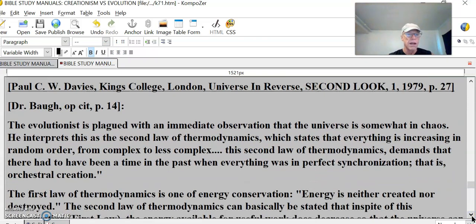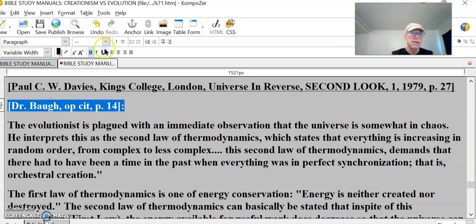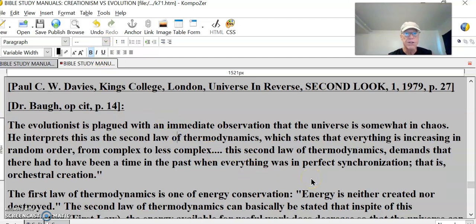Dr. Baugh says in his work, the evolutionist is playing with an immediate observation that the universe is somewhat in chaos. He interprets this as the second law of thermodynamics which states that everything is increasing in random order from complex to less complex. This second law of thermodynamics demands that there had to have been a time in the past when everything was in perfect synchronization. That is orchestral creation. Somebody designed that. You have to work backwards, reverse engineer.